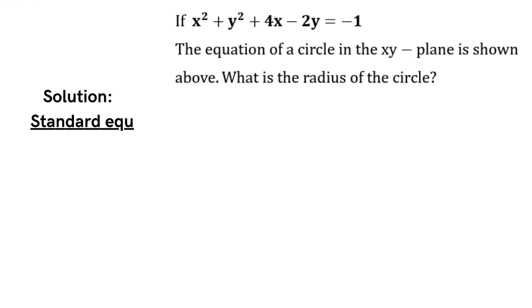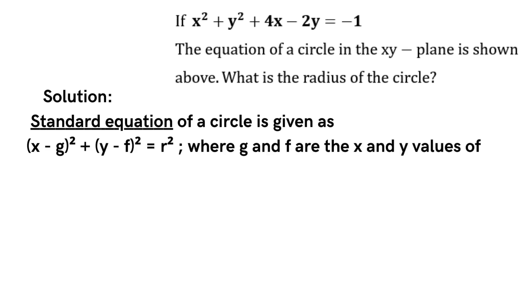The standard form of equation of a circle is the square of x minus g plus the square of y minus f equals the square of r, where g and f are the x and y values respectively at the center of the circle.